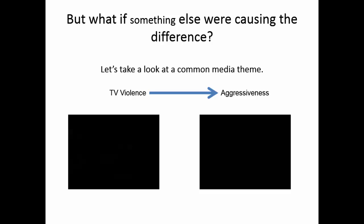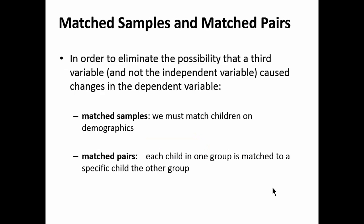We call this the third variable problem. Matched samples and matched pairs are strategies to address it. When looking at something that's already happened, the best we can do to rule out the third variable is to match our sample or individual participants. This way, anything unique that happened to one group may also have happened to the other. In a matched sample, we match one group to the other on their demographics. In a matched pair, each person in one group is matched to a specific person in the other group. Matched pairs are much stronger than matched samples.